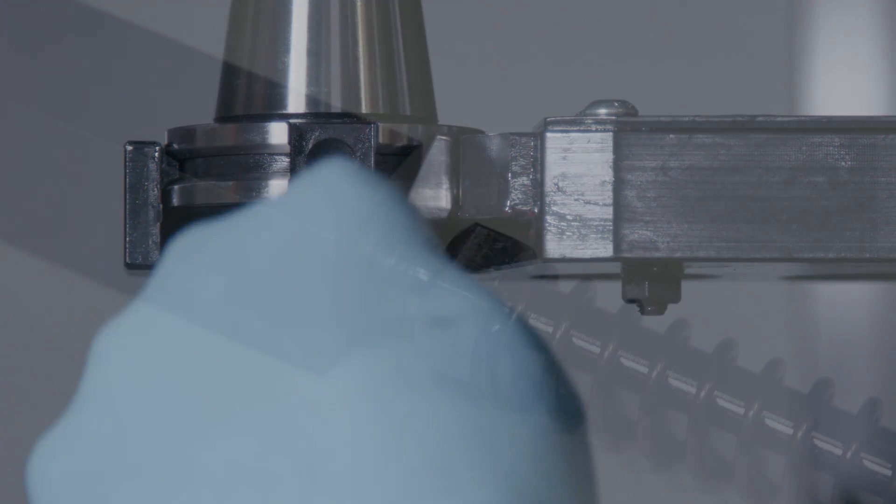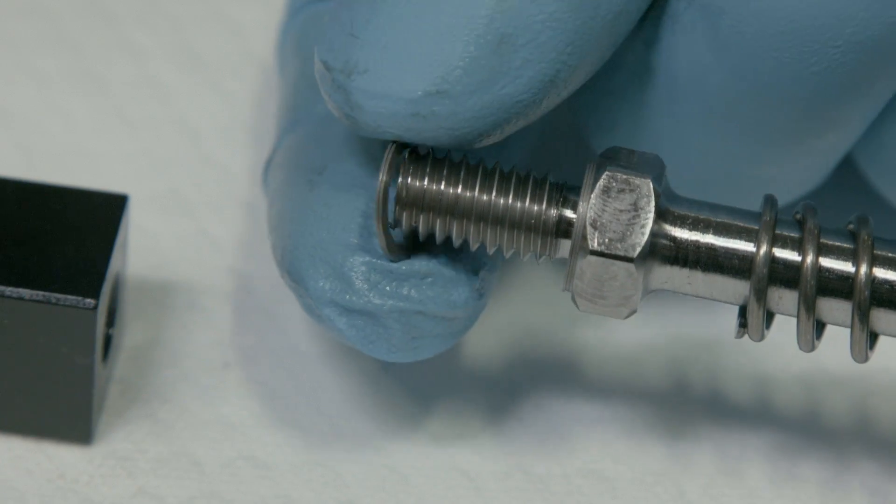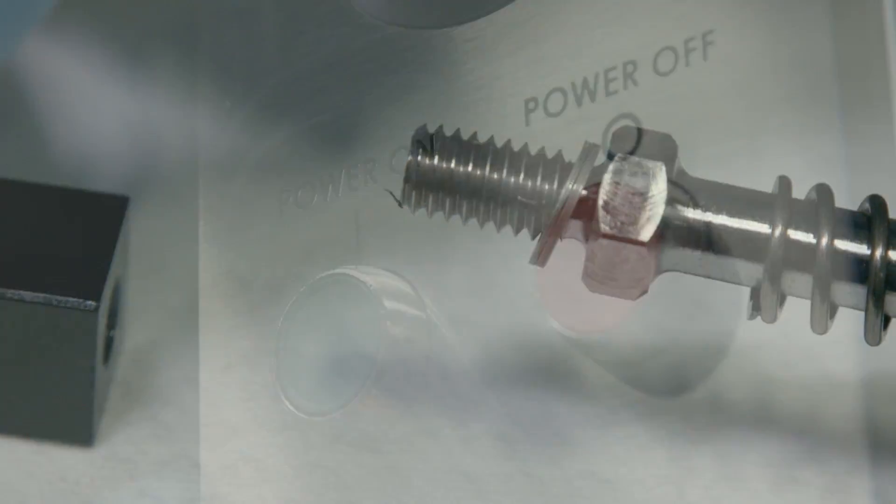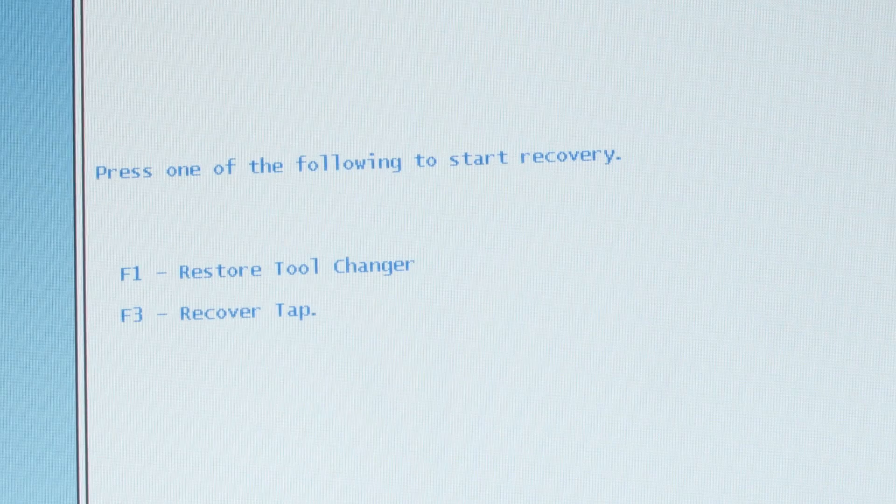If the clearance isn't correct, it should be adjusted by adding or removing shim washers between the slider and the adjusting shaft. Power up the machine, press recover and complete the tool change recovery process.